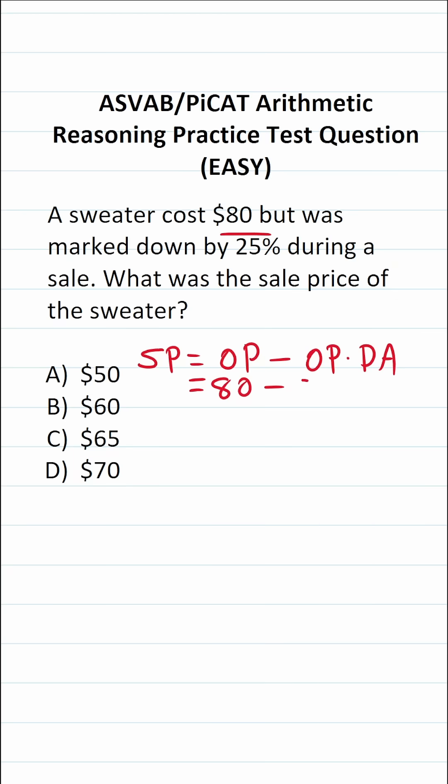So it's going to be 80 minus 80 times. Now we have a discount of 25%. And as it happens, you have a choice here as to how you want to proceed.